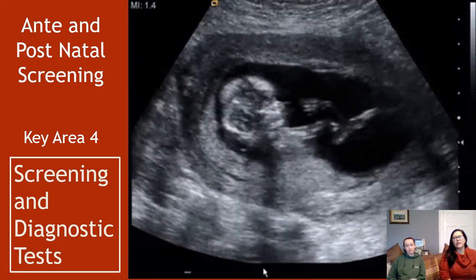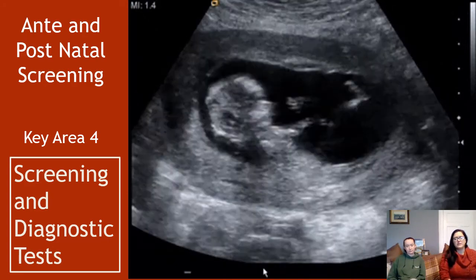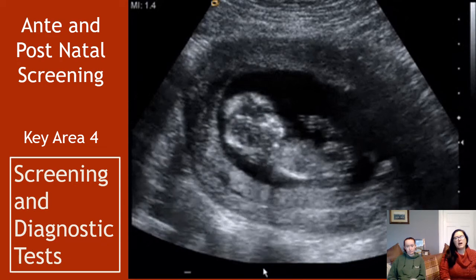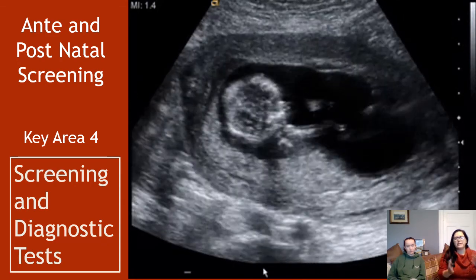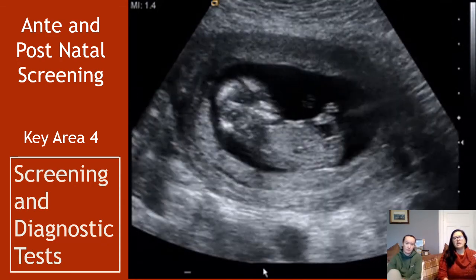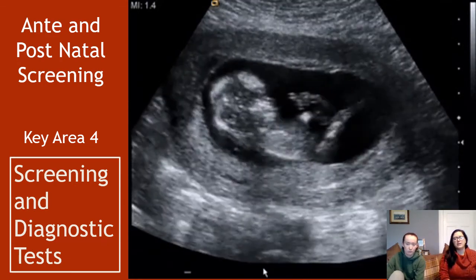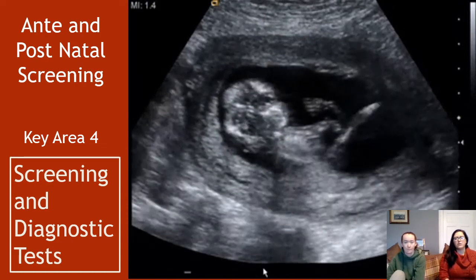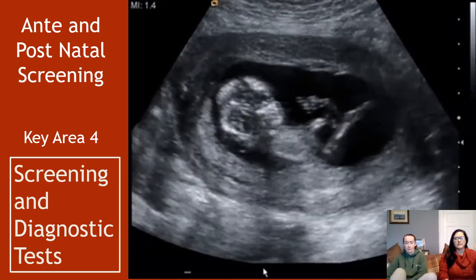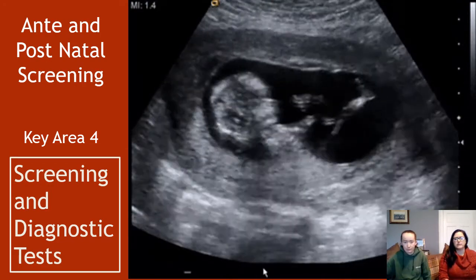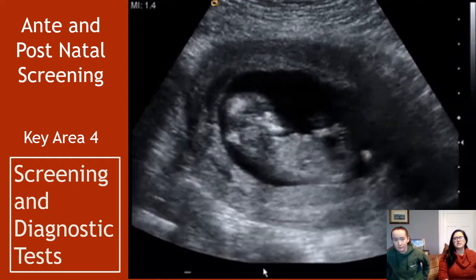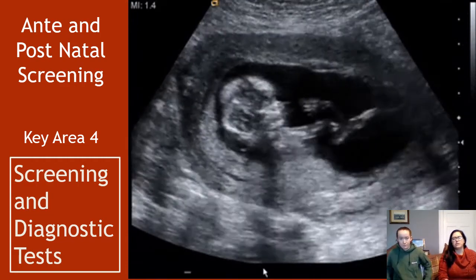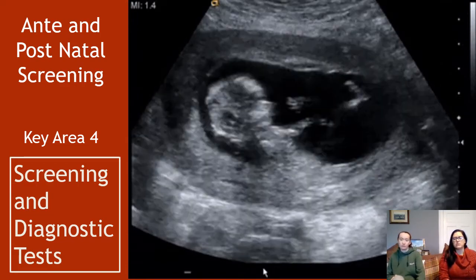This is key area 4 of unit 2, Physiology of Health of Higher Human, and we're starting off by dividing this key area into two halves. This half is screening and diagnostic tests; the second half is all about genetic counselling. So we'll be looking at screening of pregnancies and diagnostic tests that are to do with ante- and postnatal screening to start off.